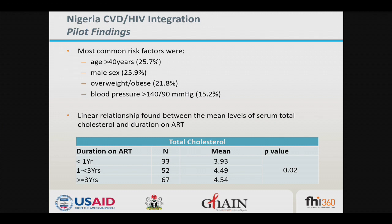About 25% of patients were aged more than 40 years, a quarter were male. In most HIV clinics in Africa, most patients tend to be female. About 21.8% were overweight or obese, and high blood pressure was found in about 15%. We also found a linear relationship between cholesterol level and duration on ART.